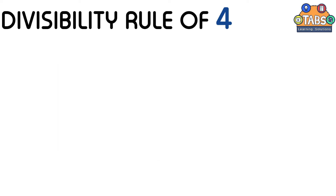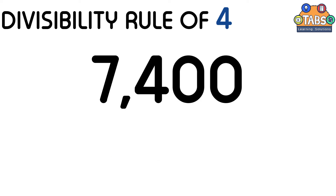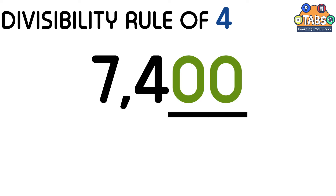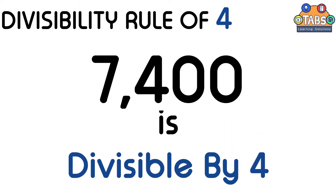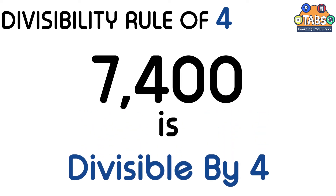Now let us take another example. 7400. The last two digits of 7400 is 00. Since 0 is divisible by any number, 7400 is divisible by 4.